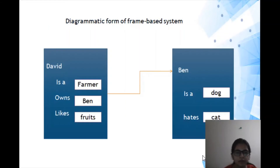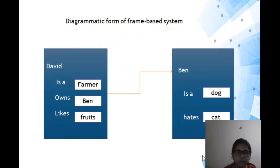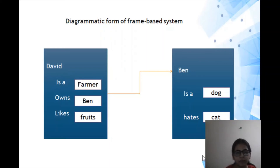A frame-based system has many frames connected via pointers. For example, there are two frames — Debit and Ban. Debit is a farmer, Debit owns pain, and Debit likes fruit. The other frame is for Ban: Ban is a dog and Ban hates cats. A frame-based system can contain as many frames as needed.